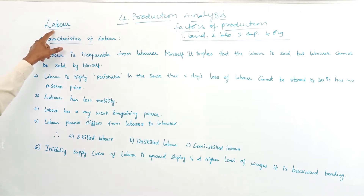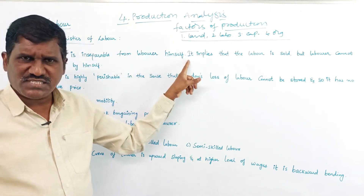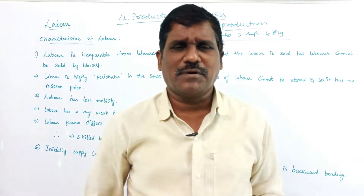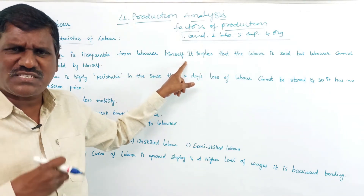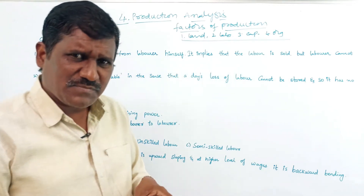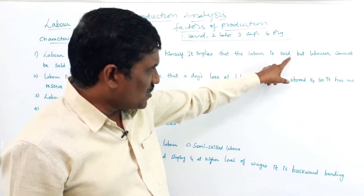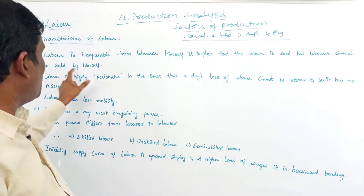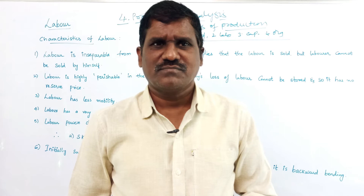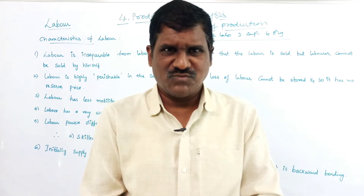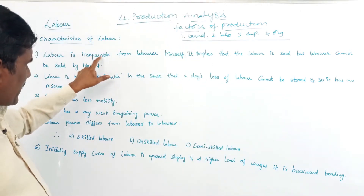Labor is the second factor of production. Characteristics of labor: First, labor is inseparable from the laborer himself. Labor is the power of the laborer — it is the internal storage of the laborer. It implies that labor is sold, but the laborer himself cannot be sold. He only renders his services, and due to that, he gets income in the form of wages.